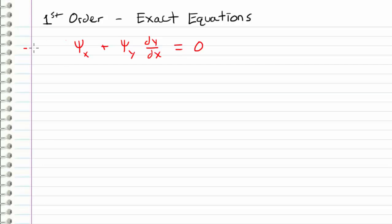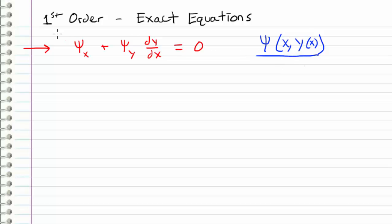We're going to look at this form of a differential equation where psi is the unknown function we are solving for. It is a function of x and y, where y is also a function of x. This is the form we refer to as an exact equation: the partial derivative of psi with respect to x, plus the partial derivative of psi with respect to y times dy/dx, equals zero.